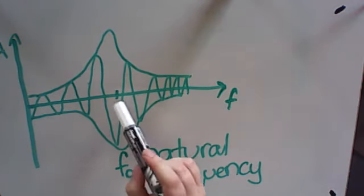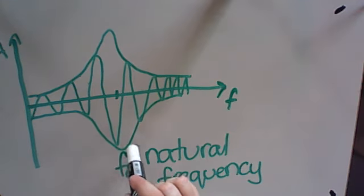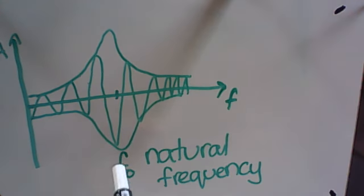So the resonant frequency here, or the natural frequency, is the frequency at which a system likes to move. And we're going to examine that in a bit more detail, but I hope you can see that most systems will have this kind of natural frequency.